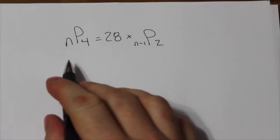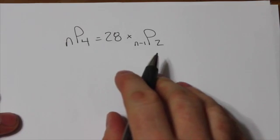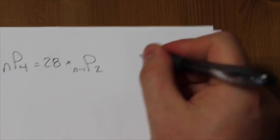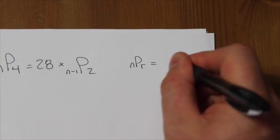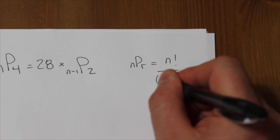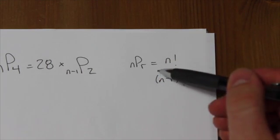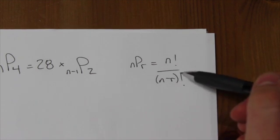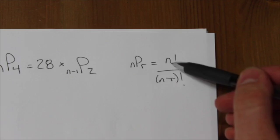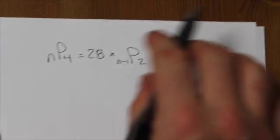The first thing we want to do is apply the definition of a permutation here, where we know that nPr is equal to n factorial over n minus r factorial. Now, another way of thinking about that is the left side permute the right side means the left side factorial over the left side minus the right side factorial. At least that's how we're going to think about it here.